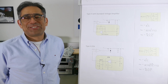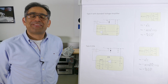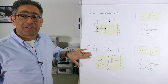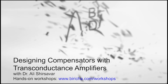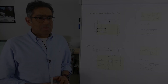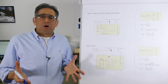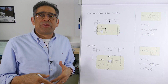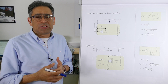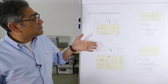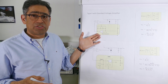Hi, my name is Ali Shehseva and in this video we are going to talk about operational transconductance amplifiers. We design compensators as part of our power supplies control loop and these are done typically with a type 3 or a type 2 compensator, but what we study and it's very common is a standard voltage amplifier.